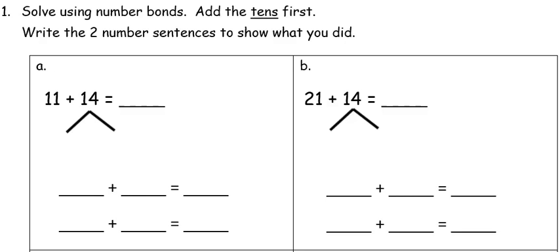This tutorial is for first grade module 4 lesson 25. In this lesson we're going to continue to use number bonds to help us add two digit numbers. The directions say solve using number bonds, add the tens first. Write the two number sentences to show what you did.